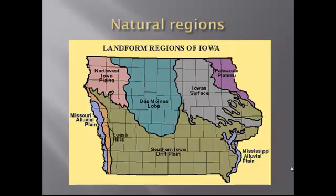To the right of that is the Iowan Surface, the headwaters and tributaries of several rivers: the Iowa River, the Cedar River, the Wapsipinicon, and the Maquoketa Rivers — four rivers in kind of northeastern Iowa.